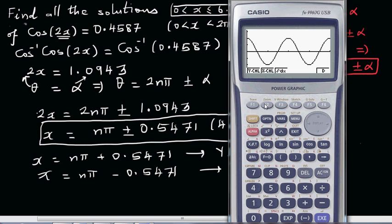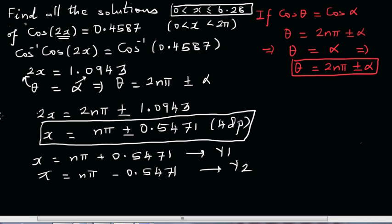Go g-solve, y-calc, sorry x-calc, and for y you go 0.4587. This is your first value, this is your second value, this is your third, and this is your fourth. You can write all the four values. This is how you find all possible solutions.